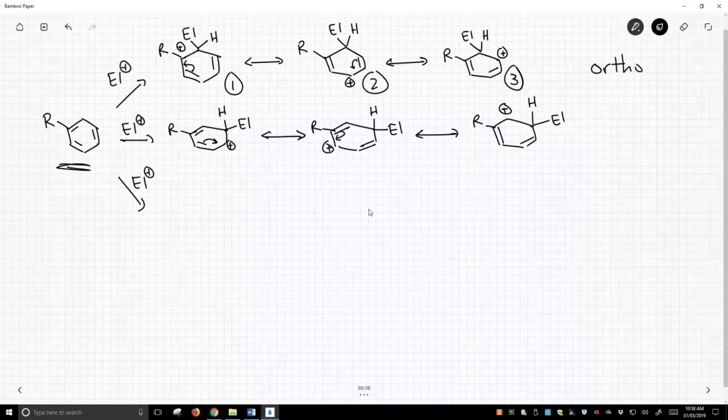If the electrophile reacts at the meta carbon, then we get this intermediate, four, and it has two additional resonance forms, numbers five and six, and that's to get to meta.